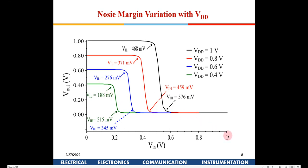For 45 nanometer technology, the nominal voltage is 1 volt. This is the VTC curve with a sizing of 1-to-2, giving a close to symmetrical VTC. VIL is 460 millivolts and VIH is 576 millivolts. Can somebody tell me what will be the noise margin low?